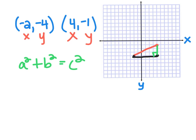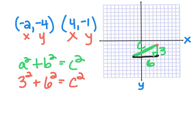Since we have a right triangle, we can use the Pythagorean theorem to find a missing side length. Looking at the bottom black line, I can just count across: one, two, three, four, five, six — that's six units long. Then counting the vertical side from bottom to top: one, two, three — that's three units long. I don't know how long the hypotenuse is, so I'll call that C.